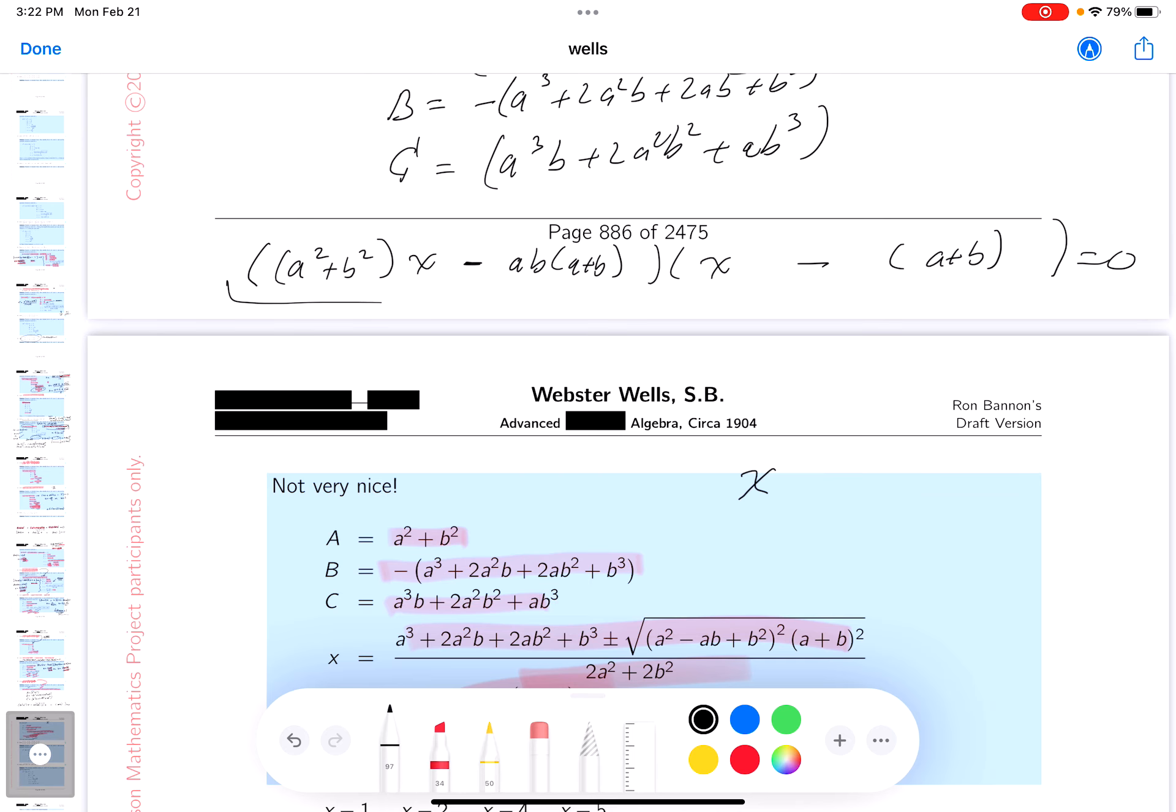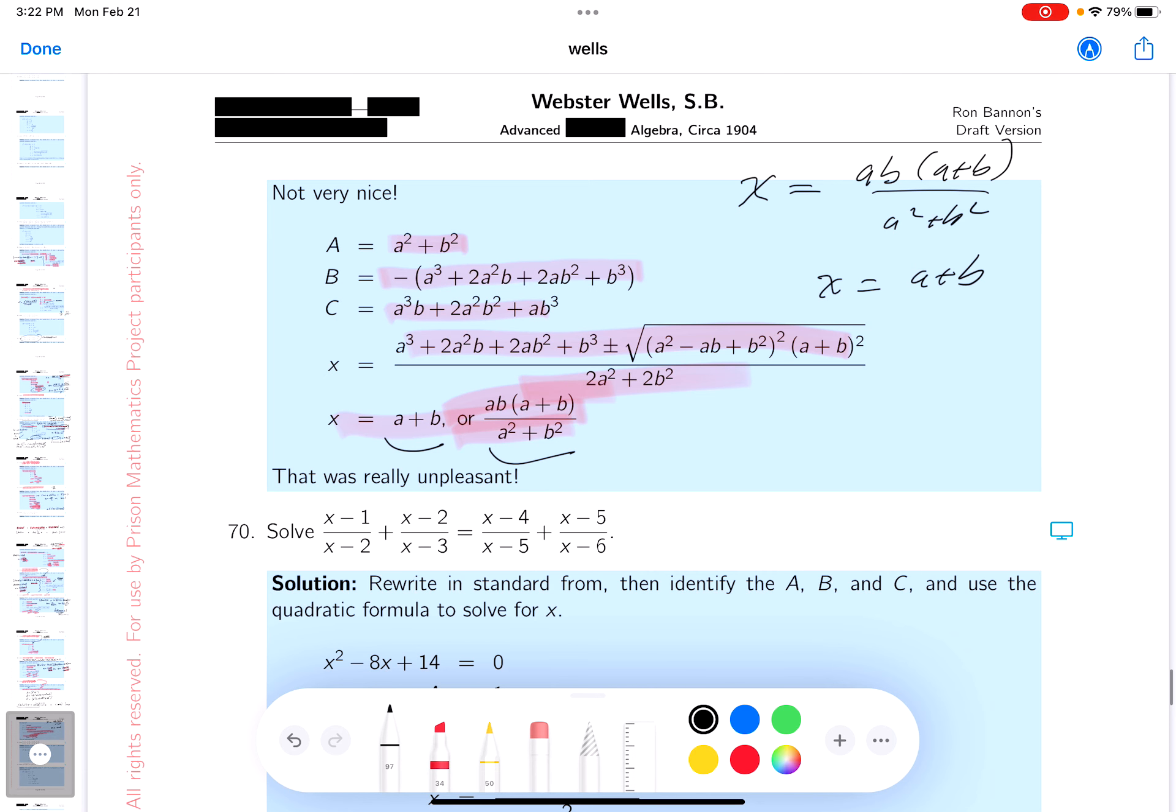What do I mean by that? Looking at the first, what do I get over here? x equals that would be ab, a plus b, over a squared plus b squared. And the second guy would be x equals just a plus b. Are we getting those answers? Let's take a look. Yeah, we're getting those answers. It's unpleasant though, I realize that.